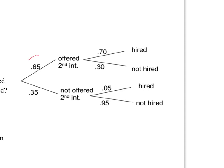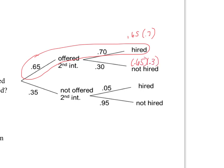We can multiply these numbers together to get our AND statements. So 0.65 times 0.7, 0.65 times 0.3, and so on. As we multiply all of these numbers going across, we recognize that they all add up to equal one. This works because the tree represents all possible outcomes — either we get the job or we don't, we had a second interview or we didn't. There are only four possible outcomes.